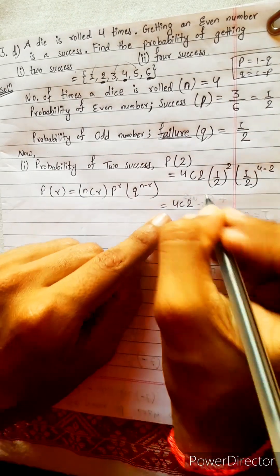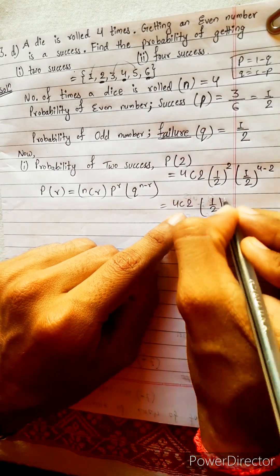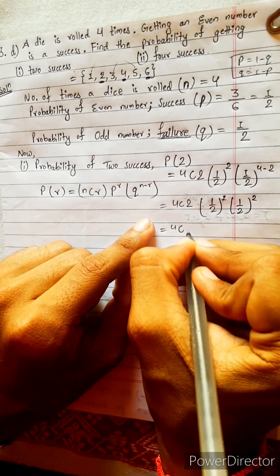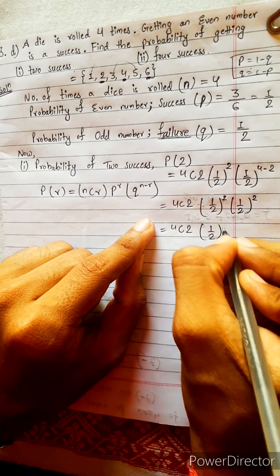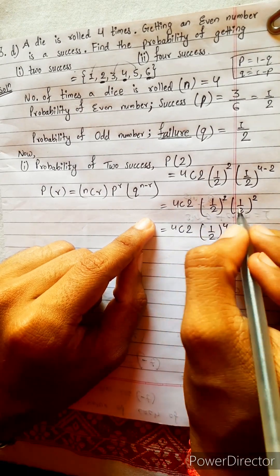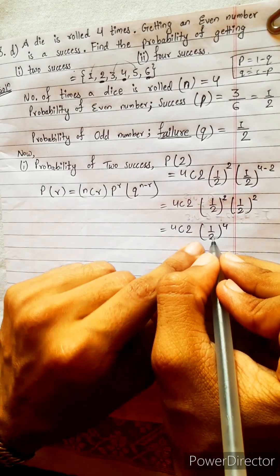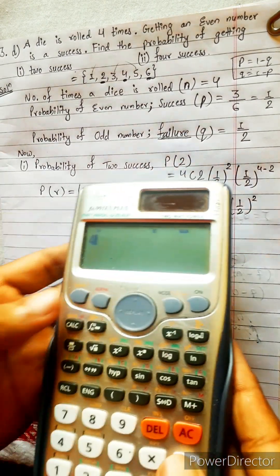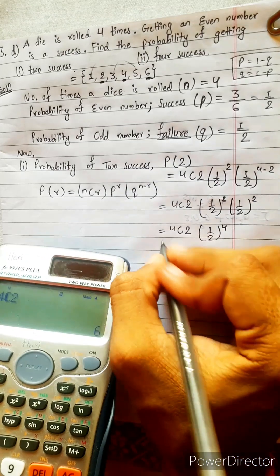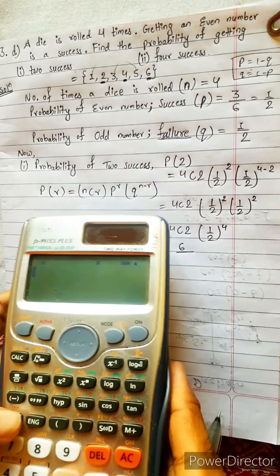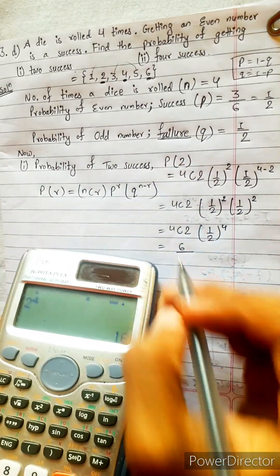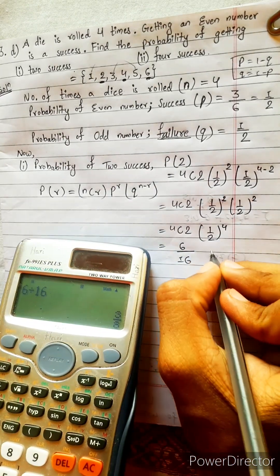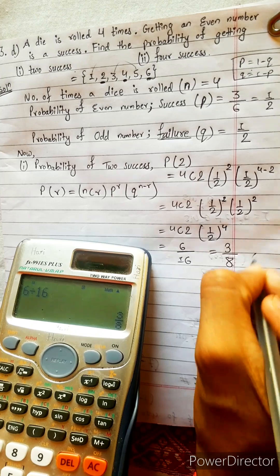This will be 4C2, one by two power two, one by two power four minus two also two. 4C2 multiplied with one by two power four. This is same base and same power, so same base and add the power. Then what can we do? 4C2, this is six. Six divided by two power four is sixteen. Yes, six by sixteen, this is three by eight. Leave it.